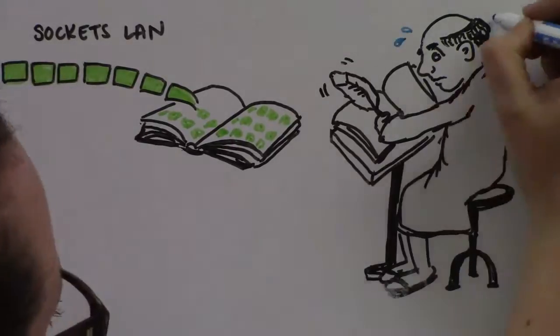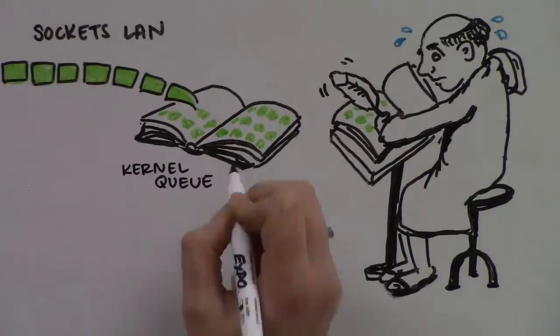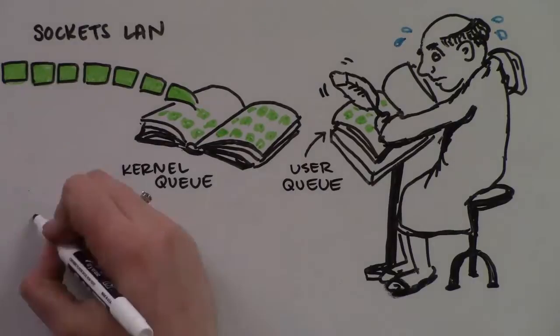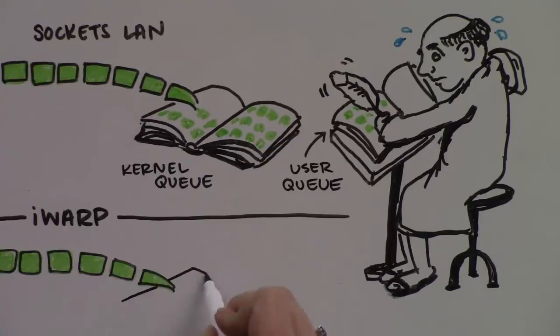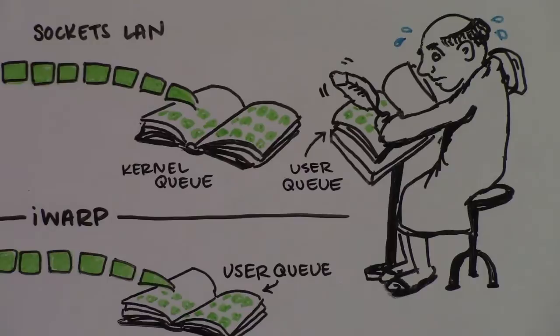That requires the processor to copy all the data from the kernel queue into the application's user space. Because iWARP already knows where the data is going with its queue pairs, it can directly place the data in the application's user space without making unnecessary copies.